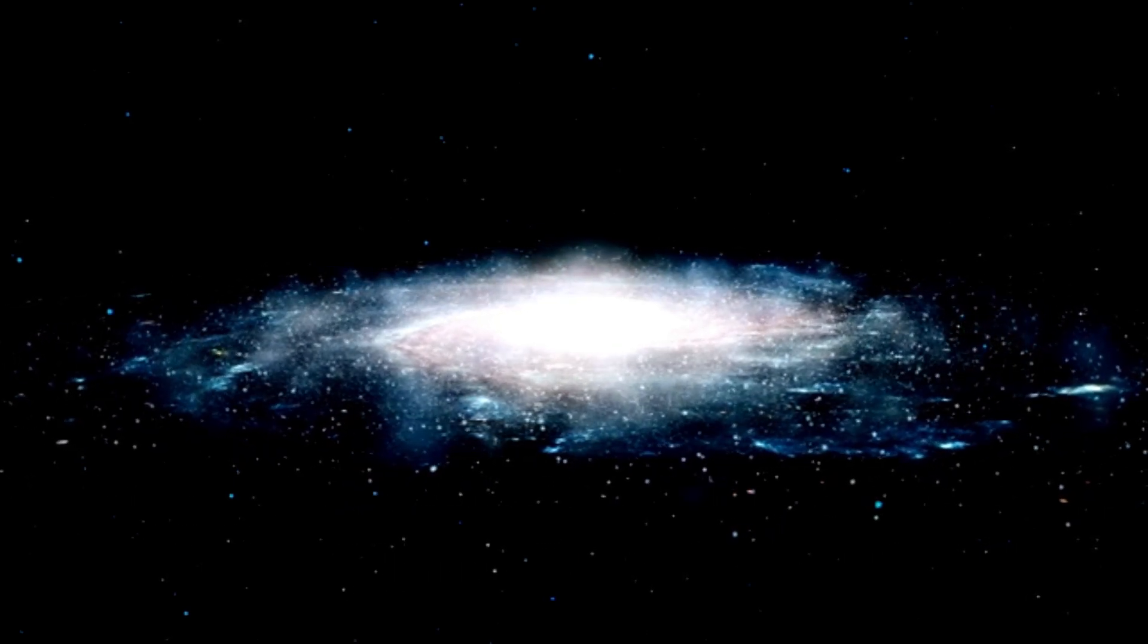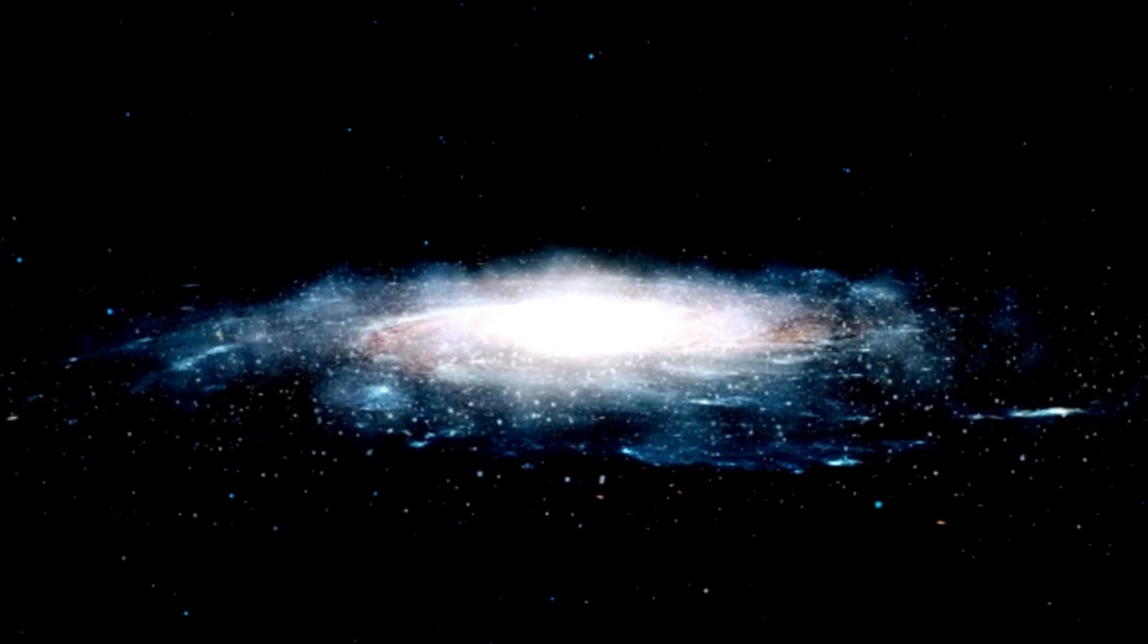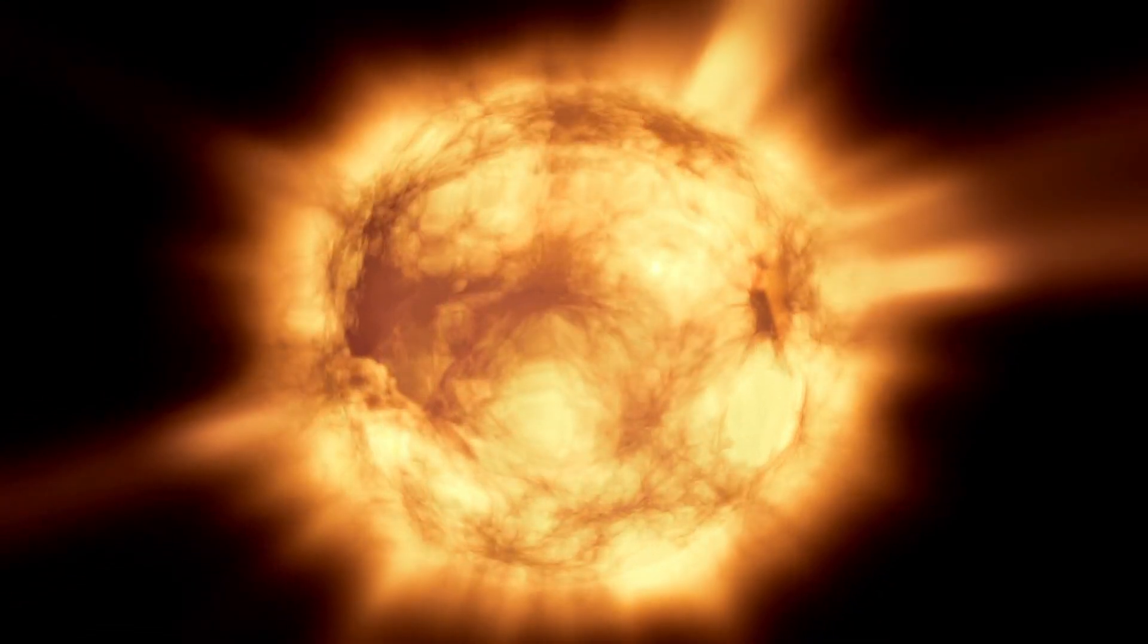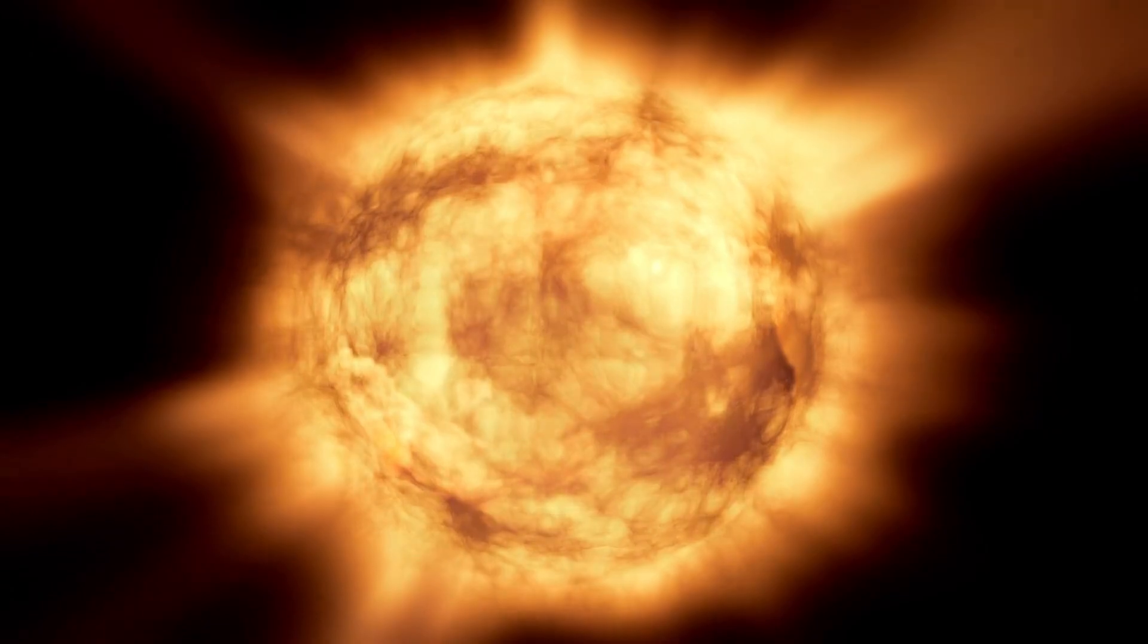The two stars, Rigel Centauri and Toliman, form the binary known as Alpha Centauri A and B. These G- and K-type stars appear as one star in the constellation Centaurus and are the third brightest stars in our night sky, with a peak magnitude of minus 0.27. Proxima Centauri, otherwise known as Alpha Centauri C, is a red dwarf or M-star found 2.1 light-years from the other two stars, multiple times the distance between Earth and the Sun.